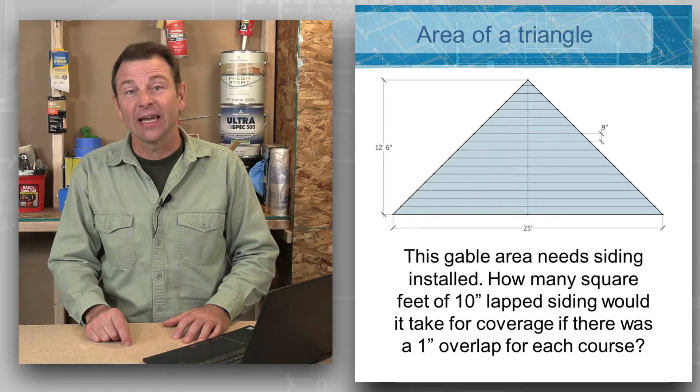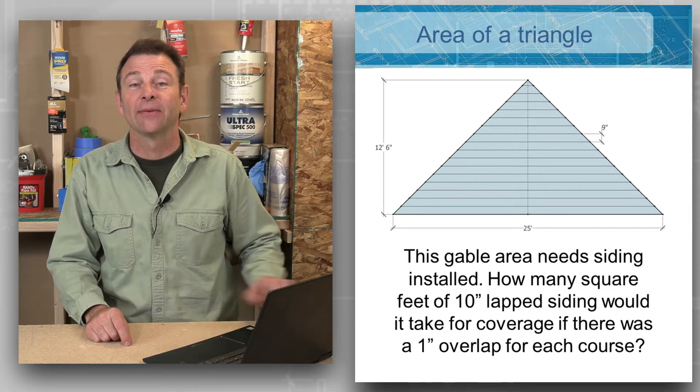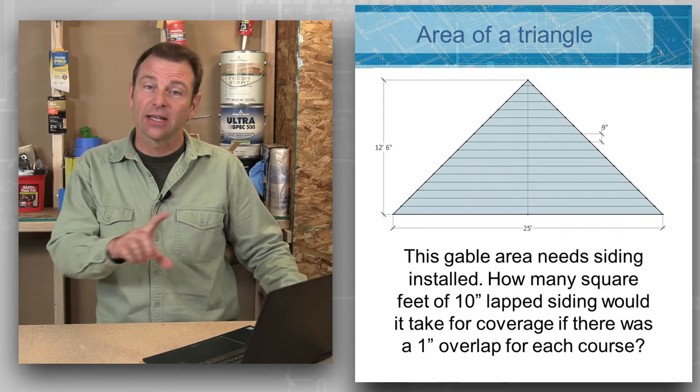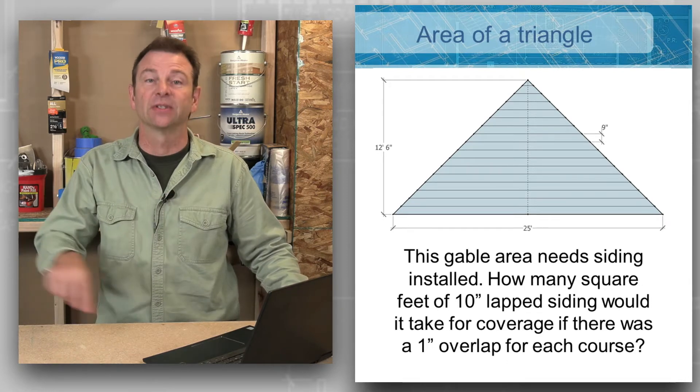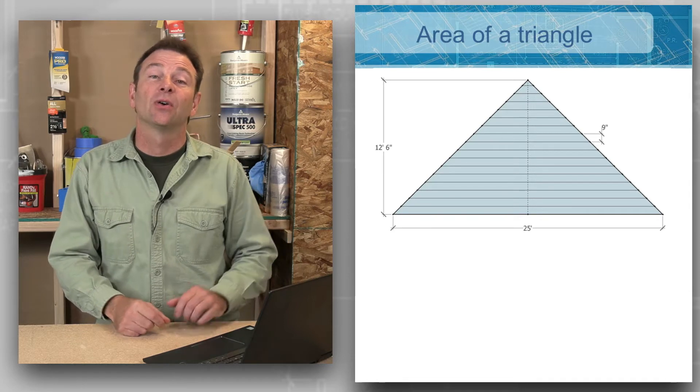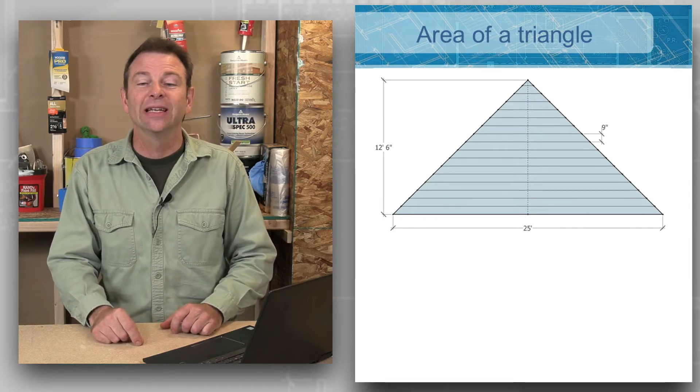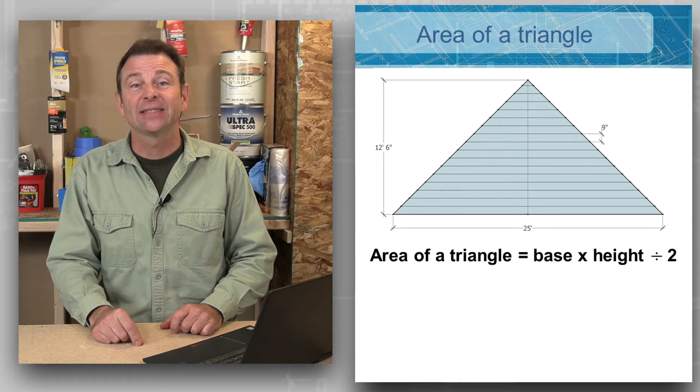How many square feet of 10 inch lap siding would it take for coverage if there was a one inch overlap for each course? To solve for the area of a triangle we need to multiply the base times the height and then divide it by two.